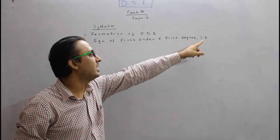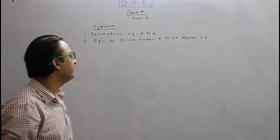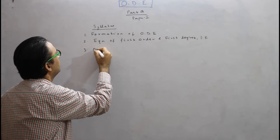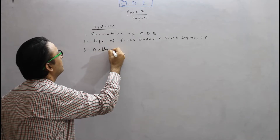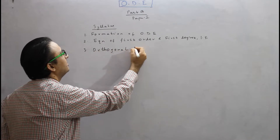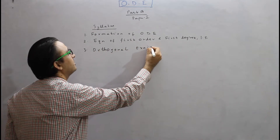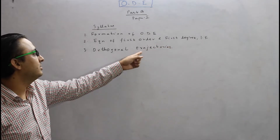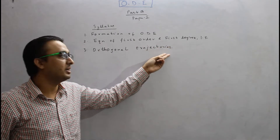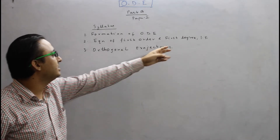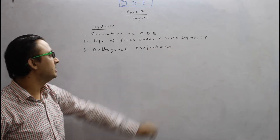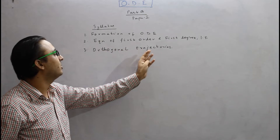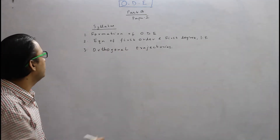Particularly, a question is asked premised on the integrating factor. Third is orthogonal trajectories. Questions are asked invariably, alternatively, in both Cartesian as well as polar coordinates. This is part of the application of differential equations that we are going to study.